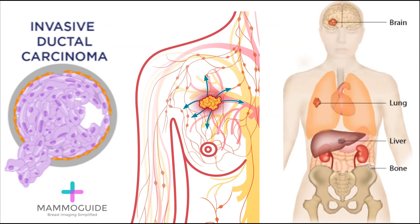Once the cancer cells have broken through the myoepithelial layer and formed into a mass, they can then spread to regional lymph nodes, and from there to more distant lymph nodes or other areas of the body, such as the brain, lung, liver, or bone. This is where the morbidity of breast cancer can turn lethal.